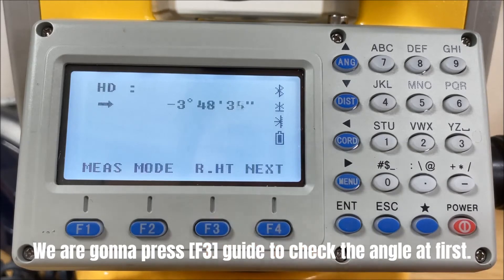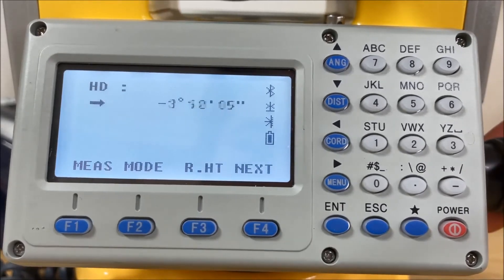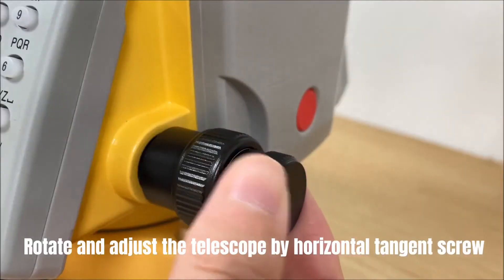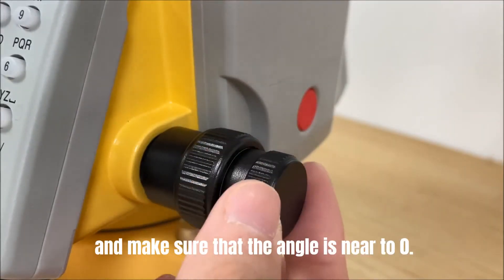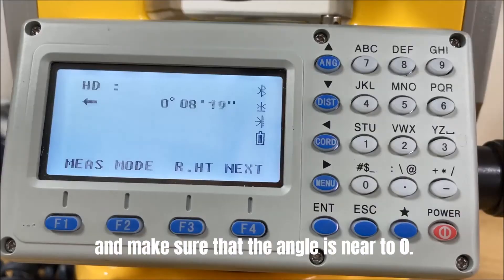And now, we will press F3 guide to check the angle at first. Rotate and adjust the telescope by horizontal tangent screw and make sure that the angle is near to zero.